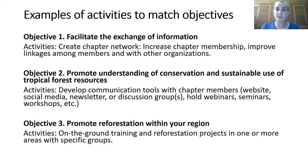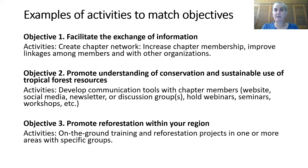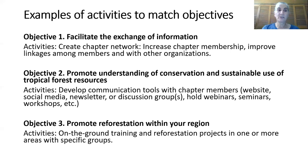Here are some examples of activities to meet those objectives. For objective one, facilitating the exchange of information, that might mean creating your chapter network, including increasing chapter membership and improving linkages among members and with other organizations. For objective two, promoting understanding of conservation and sustainable use of tropical forest resources, your activities could include developing communication tools such as a website, social media, a newsletter, and discussion groups, as well as holding webinars, seminars, and workshops to disseminate information. For objective three, promoting reforestation within your region, activities might include on-the-ground training and reforestation projects in one or more areas with specific groups.